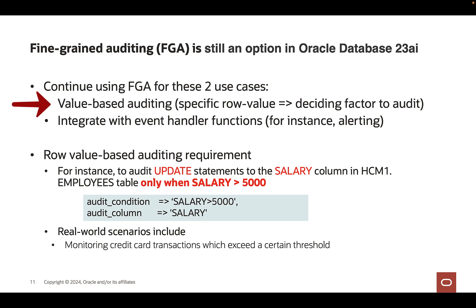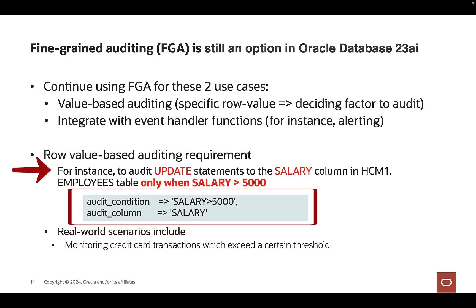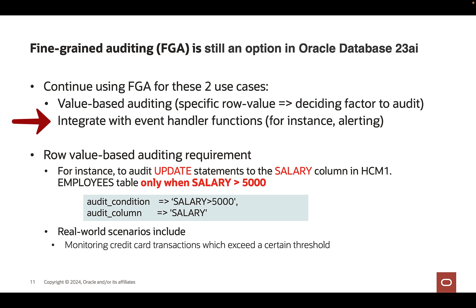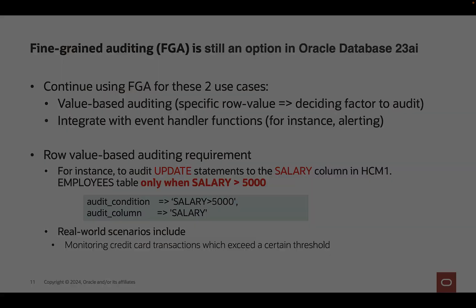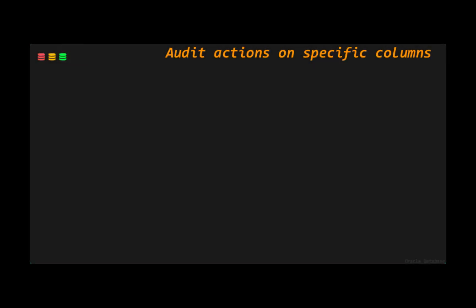One such use case is monitoring sensitive data access based on row values — for instance, auditing update statements to the salary column only if the salary is above 5000. A typical real-world scenario is monitoring credit card transactions above a certain threshold. Another use case is when you need to integrate with event handler functions within the database — say, sending an email alert to a security administrator when an audited column that should not be changed at midnight is updated.